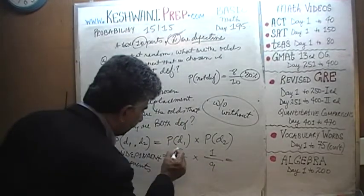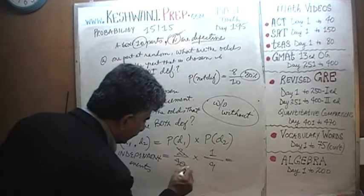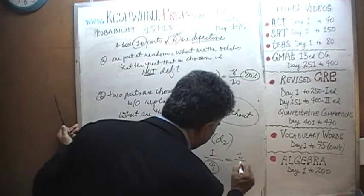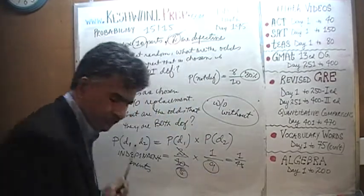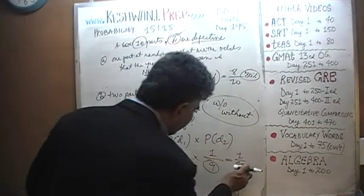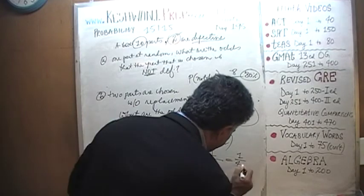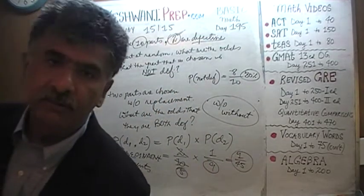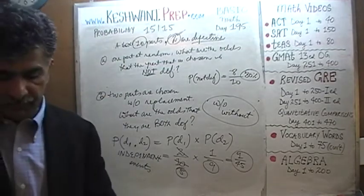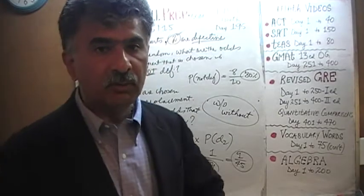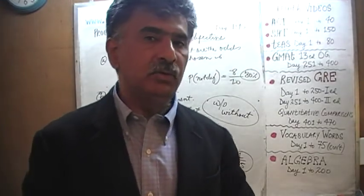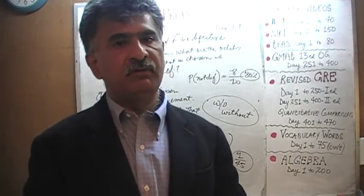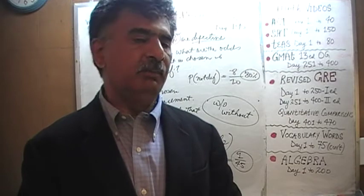That's all. The 2 cancels with 10 to give 5, so it's 1 over 5 times 9. The answer is 1 out of 45. There is a 1 in 45 chance that the two parts you pick at random from the box without replacement — given that 2 out of 10 are defective — will both be defective.